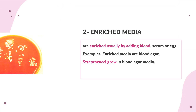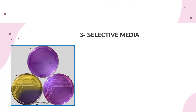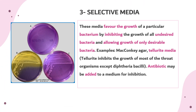The second type of routine media is enriched media. Enriched media are usually enriched by adding blood, serum, or eggs, such as blood agar. Streptococci grow well in blood agar media.